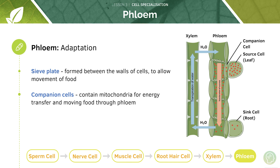In addition, the phloem has companion cells. The companion cells basically help keep the phloem alive, as they have mitochondria — the powerhouse of the cell — for energy transfer. This energy is used to move the food through the phloem.